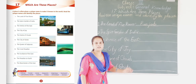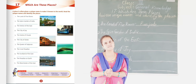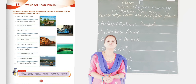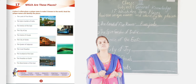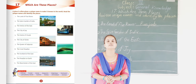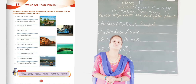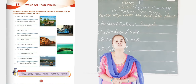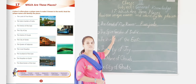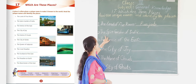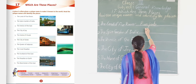Now the next one is the Spice Garden of India. In this place all the spices are available. This place is producing spices and distributing them all over the world. Which place is it? It is Kerala. Kerala is also a state of our country. The Spice Garden of India is Kerala.